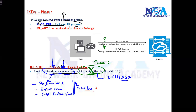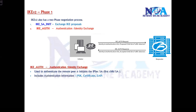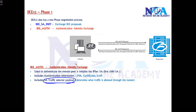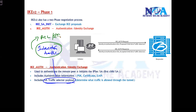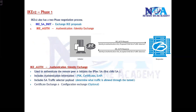Apart from authentication, messages three and four also include the traffic selector payload. This defines what traffic should be protected by IPSec — similar to configuring interesting traffic with an ACL specifying source, destination, and ports. If using digital certificates, certificate information is also exchanged in these messages, though this is optional.